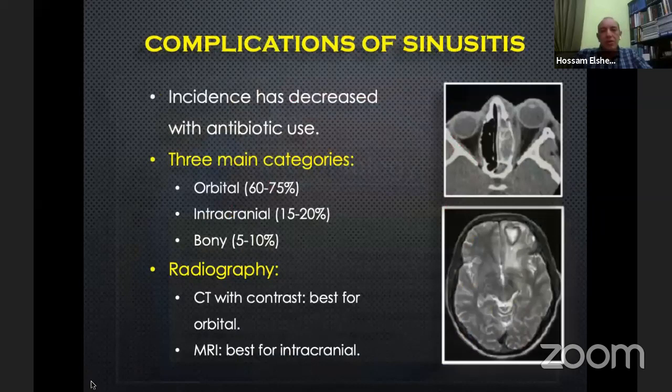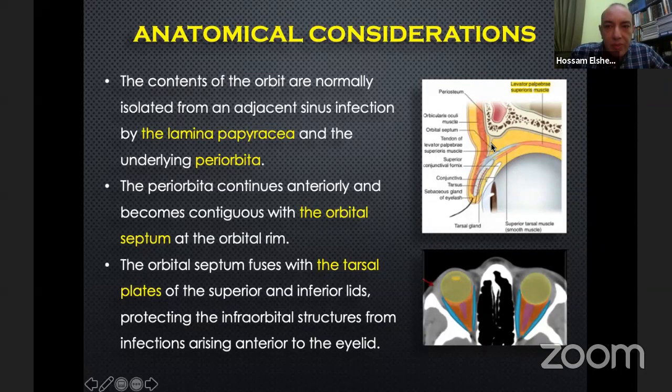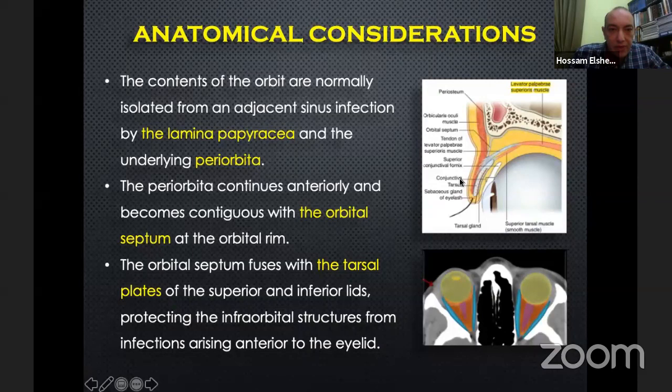The orbit is isolated from sinus infection by the lamina papyracea and by the underlying periorbita. The periorbita continues anteriorly, and at the orbital rim it becomes attached to what's called the orbital septum. The orbital septum attaches inferiorly to the tarsal plate. The orbital septum is separating infection which occurs anterior to it in the eyelid from infection which occurs inside the orbit — that's very important information.